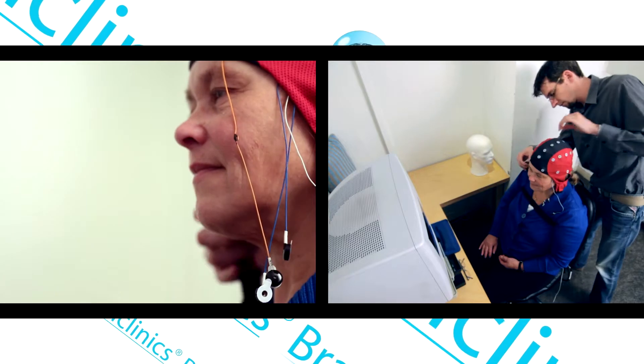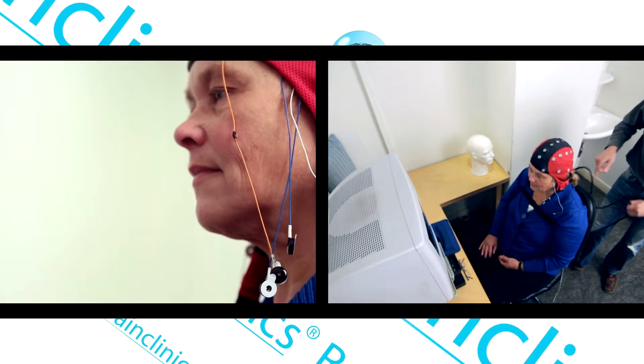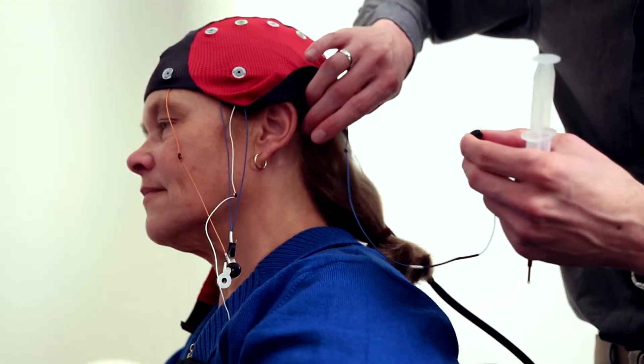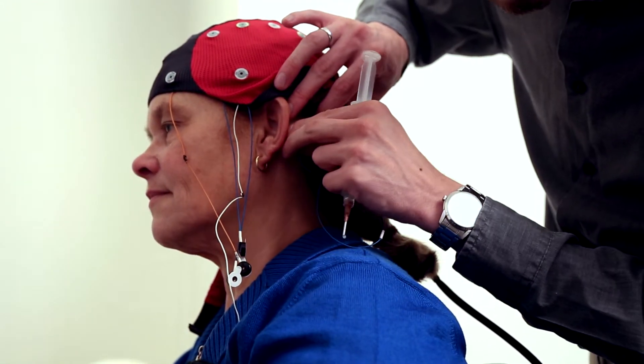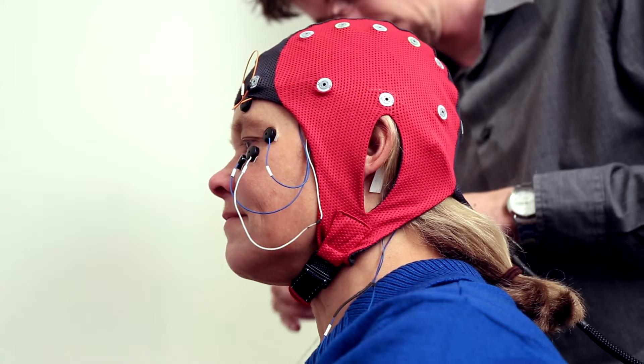The researcher places a specially selected cap on the client's head. This cap contains electrodes that measure brain activity. The cap also contains a number of electrodes that are attached to several places on the face, such as around the eyes and the jaw.